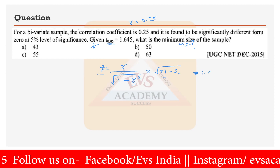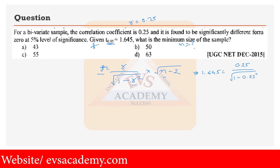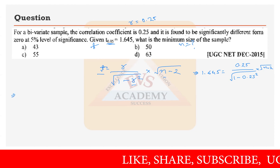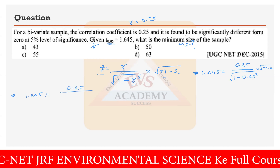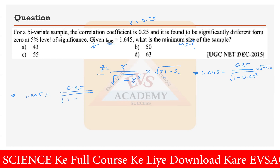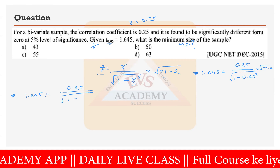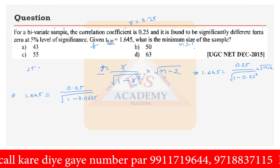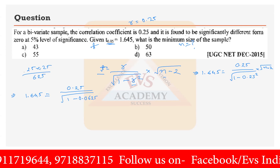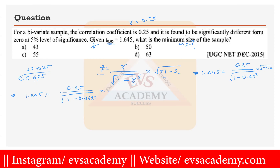Substituting the values: 1.645 = 0.25 / √(1 - 0.25²) × √(n - 2). Now 0.25² = 0.0625, so 1 - 0.0625 = 0.9375. The expression becomes 1.645 = 0.25 / √0.9375 × √(n - 2).